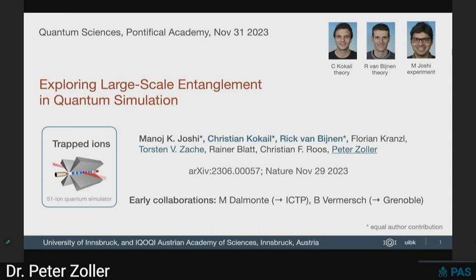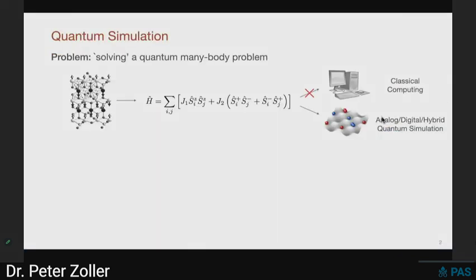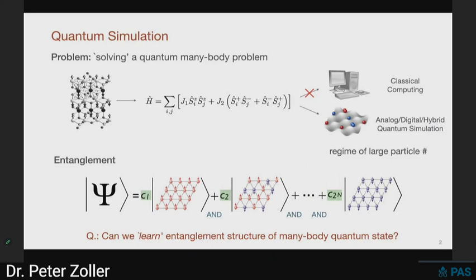We've had several talks about quantum simulation per se — we have some material doing high-energy physics. At the end of the day, you write down a Hamiltonian and you want to solve this many-body problem by building a device either as an analog simulator, as a digital, or maybe in some hybrid quantum simulation instead of classical computation. The reason why we do that is that we always argue that entanglement is kind of the secret sauce behind the power of quantum computing.